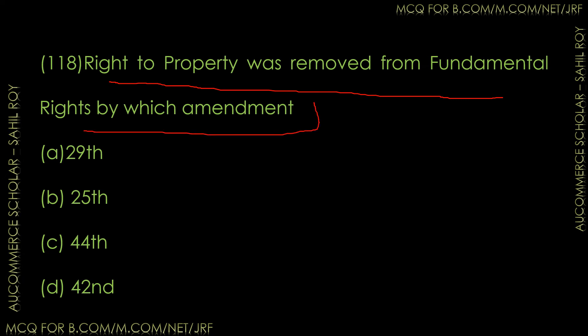Question number 118: The Right to Property was removed from the Fundamental Rights by which amendment? Options: 29th Amendment, 25th Amendment, 44th Amendment, or 42nd Amendment. The correct answer is Option D — the 44th Amendment. The Right to Property was removed from Fundamental Rights by the 44th Amendment.